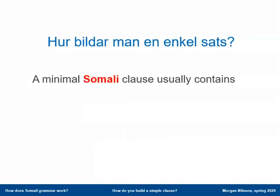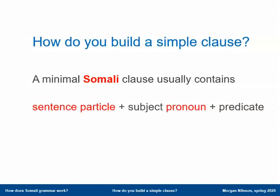A Somali minimal clause differs a bit from an English one. A Somali minimal clause usually contains three things: something called a sentence particle, which I'll say more about in a little while; then a subject pronoun, very similar to the first example we had in English — 'she laughed'; and a predicate, normally a verb, like all the examples we saw in English with 'laughed' and other verbs.